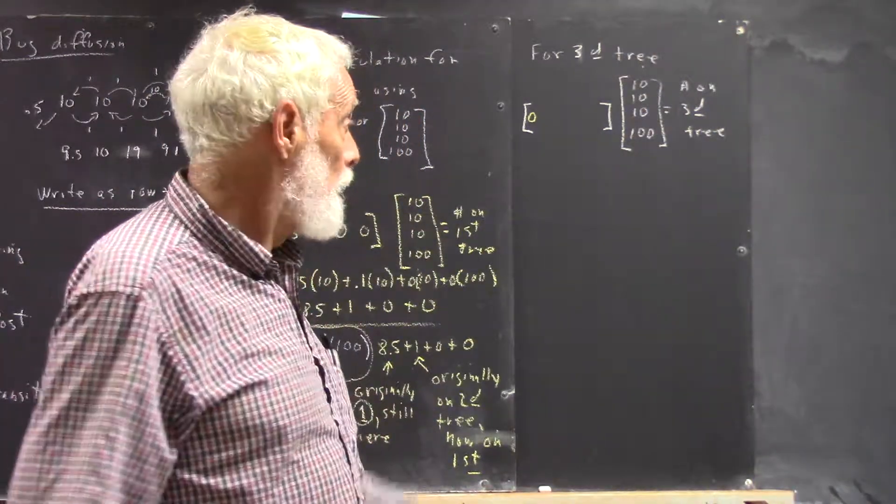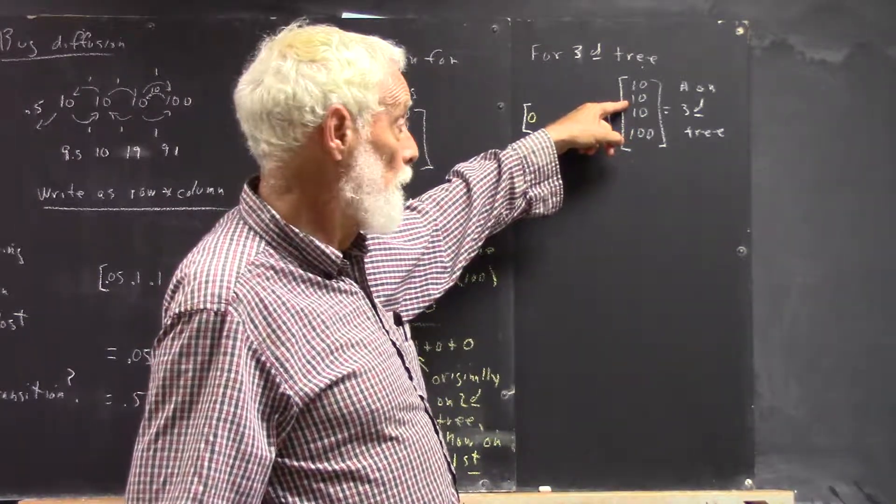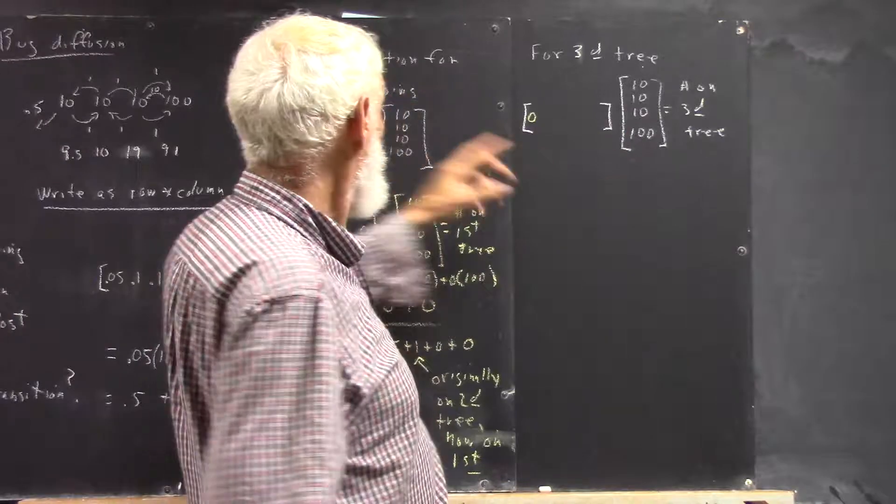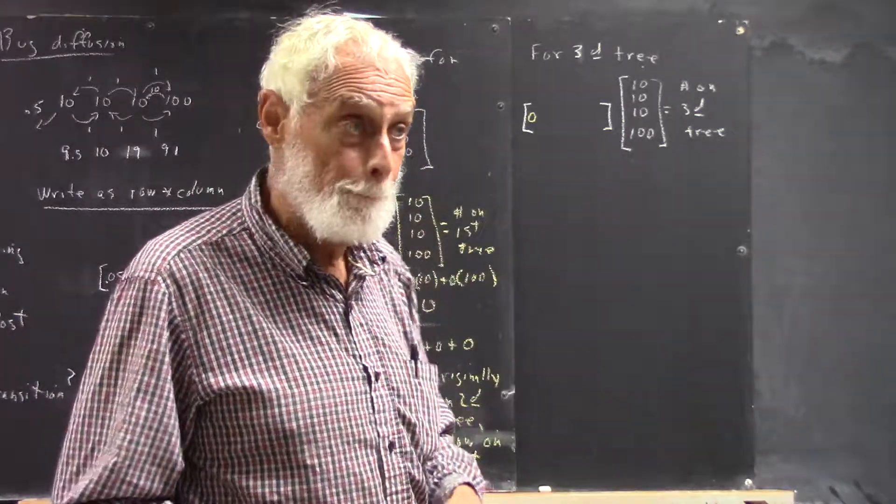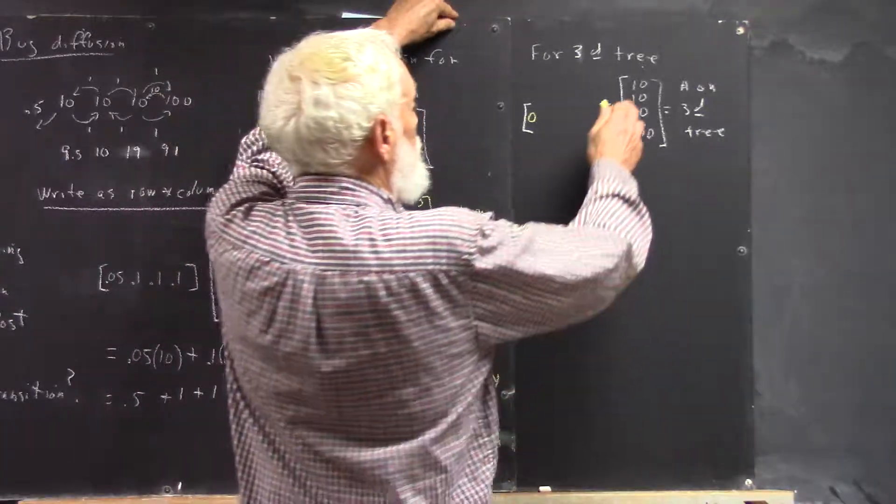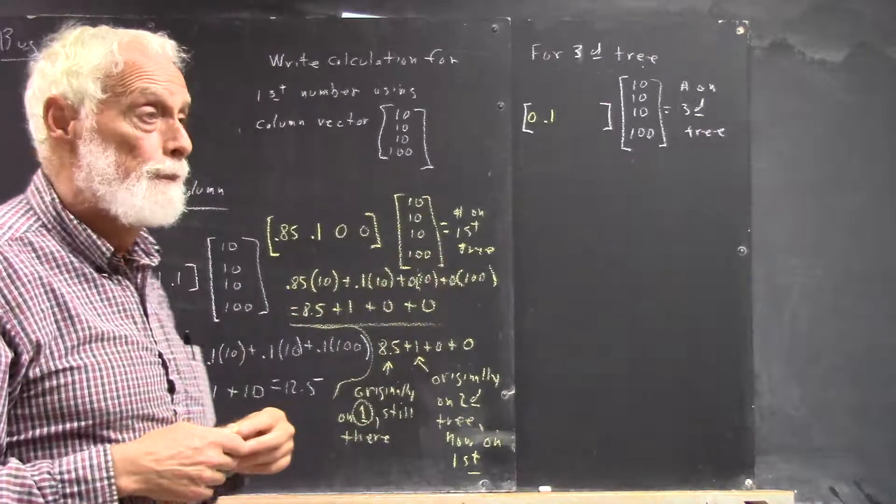Now, how many of the bugs on the second tree go to the third tree? Well, we know that one bug goes because 10% of the bugs on the second tree go to the third. So we would multiply the 10 by 0.1.